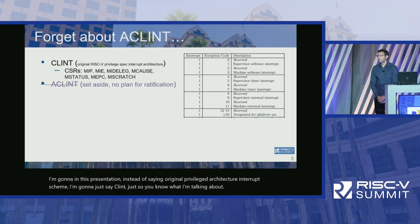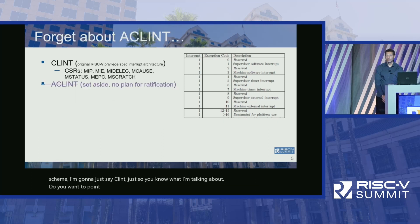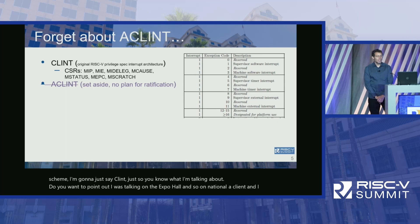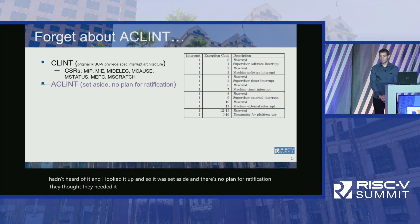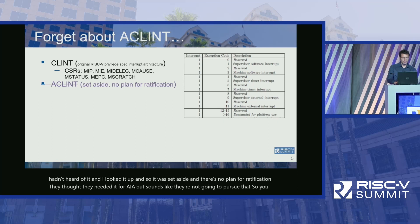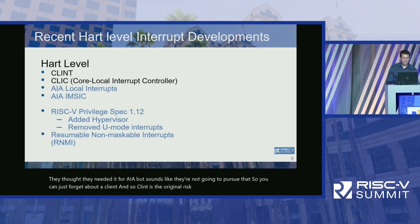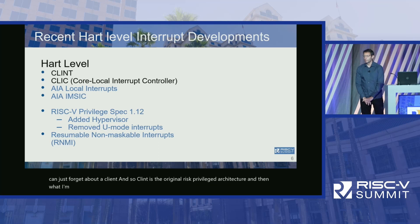I was talking on the expo hall floor and someone mentioned ACLINT. I looked it up and it was set aside — there's no plan for ratification. They thought they needed it for AIA, but it sounds like they're not going to pursue that, so you can just forget about ACLINT. CLINT is the original RISC-V privileged spec architecture, and what I'm talking about today is CLIC — I'll give some background on that.